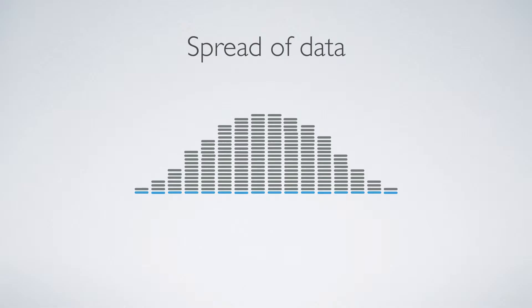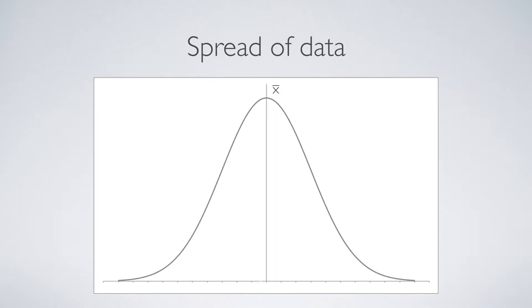This type of distribution is what we would call a normal or a Gaussian distribution and is the distribution that we should be hoping for in any given set of data.